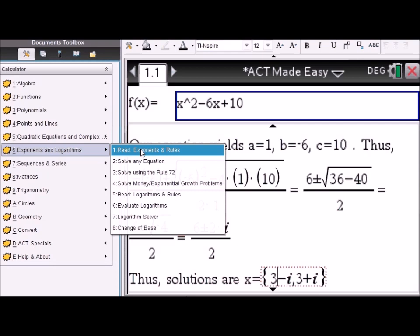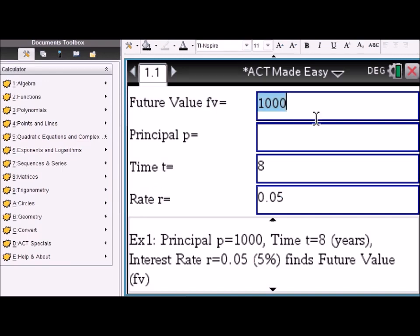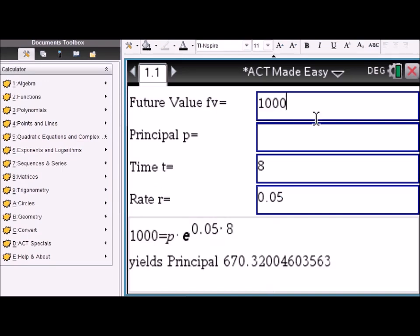Exponential and logarithmic functions. Let's solve an exponential money problem. Say you're given a future value and you want to know the principal. You leave the principal box blank and then you look at the bottom. The principal turns out to be 670. Change the future value, say 10,000, and then the principal changes immediately to 6700.